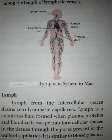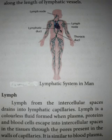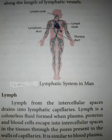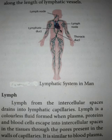The lymph fluid is similar to the blood plasma. Blood plasma is the fluid part of the blood, which contains RBCs, WBCs, and blood platelets. Blood plasma is colorless. The lymph is essentially like the plasma component of blood.